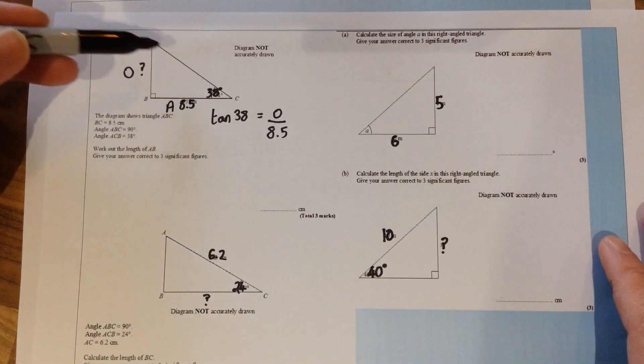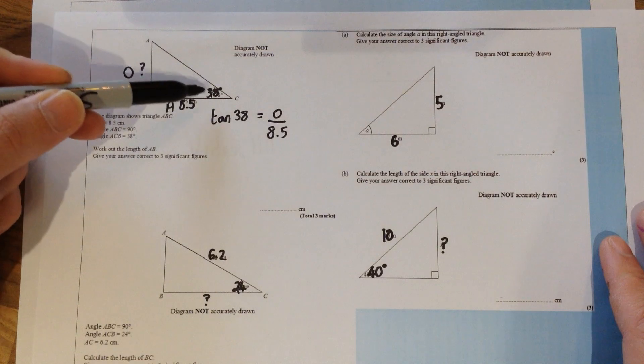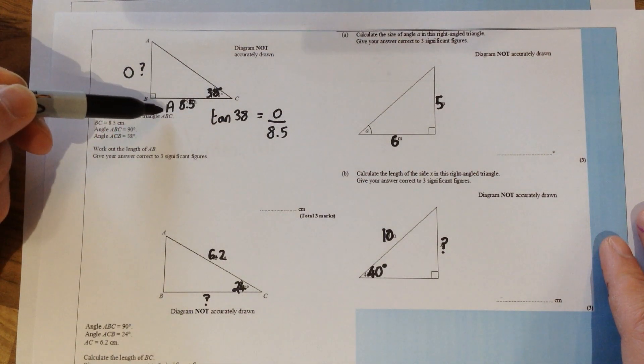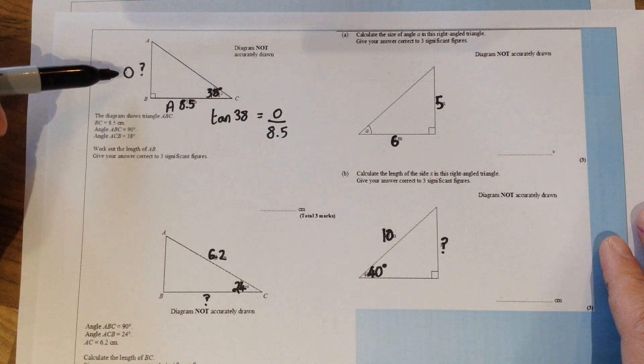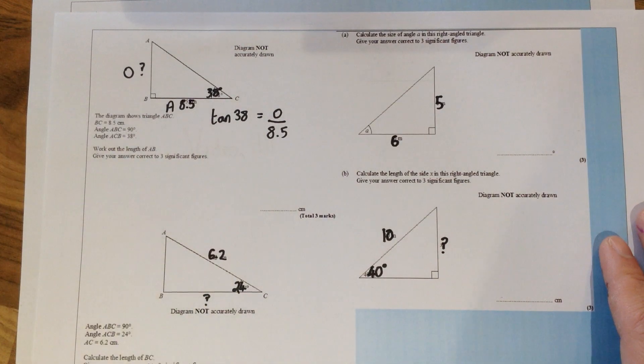I've started labelling up the first one. So here based on the angle being here this will be the adjacent side because it's just next to the angle. This is the opposite side. We've got the opposite and adjacent, well they're linked by tan.